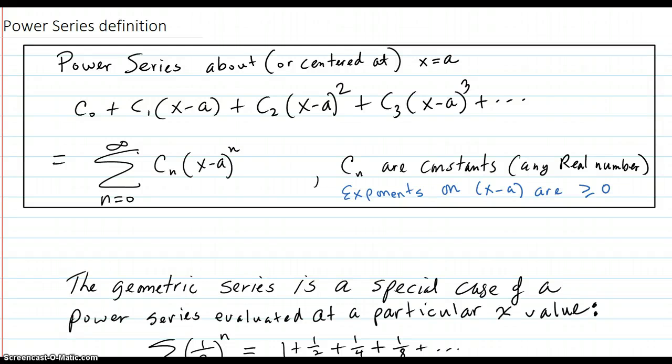The definition of power series. A power series about or centered at x equals a is a constant multiplied by powers of (x minus a). You have (x minus a) to the first, another constant times (x minus a) to the second. The very first one is (x minus a) to the zero, another constant times (x minus a) to the third, and so forth.